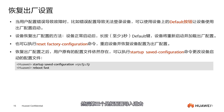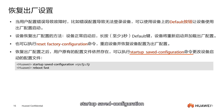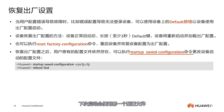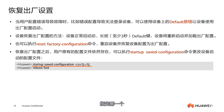When a terminal has failed to come online, first check if the failure reason can be identified using the command 'display online fail record' to check whether the fault has been recorded.